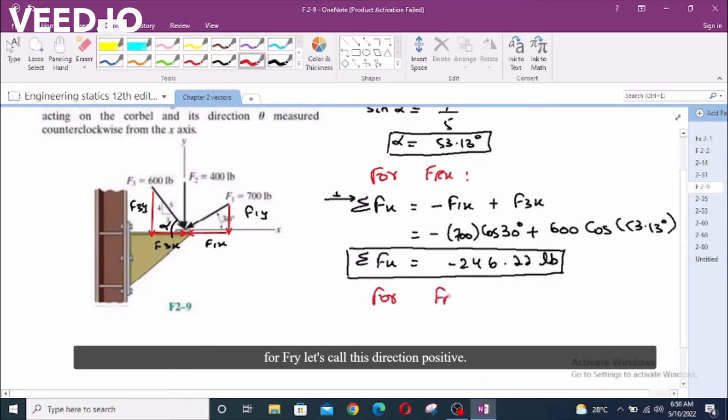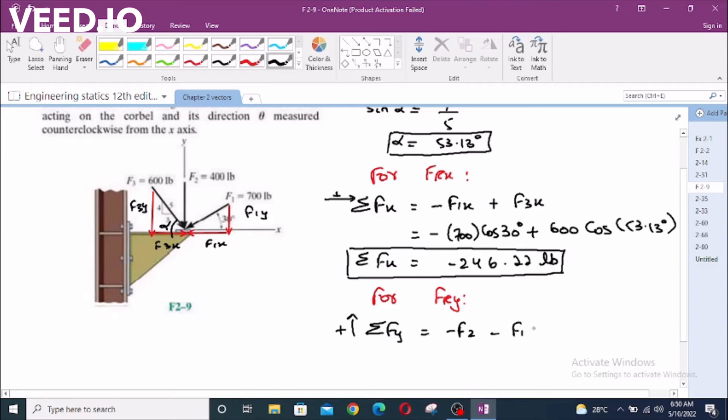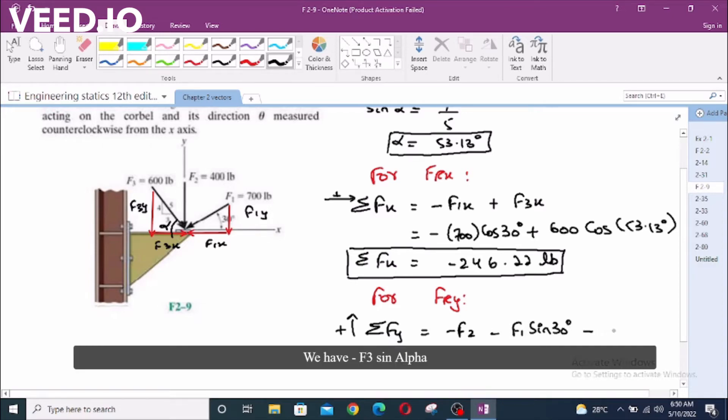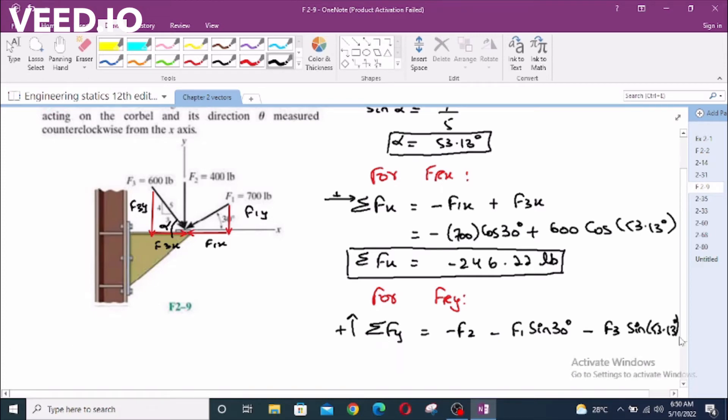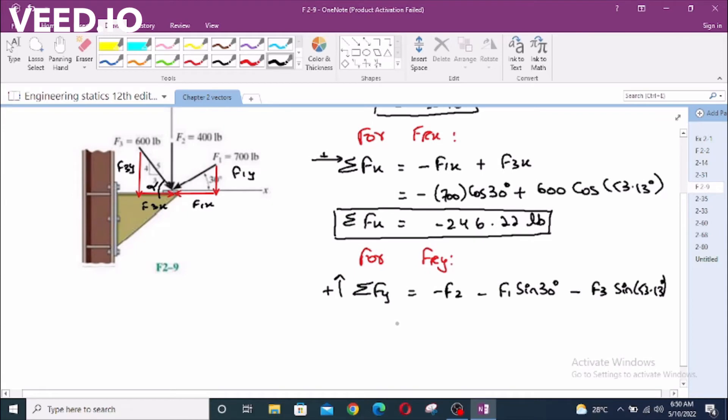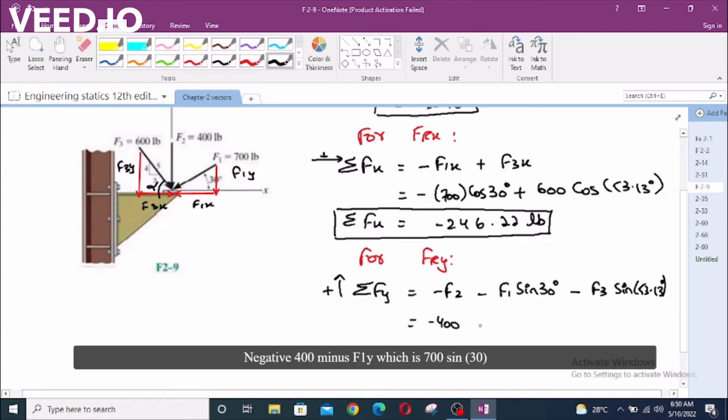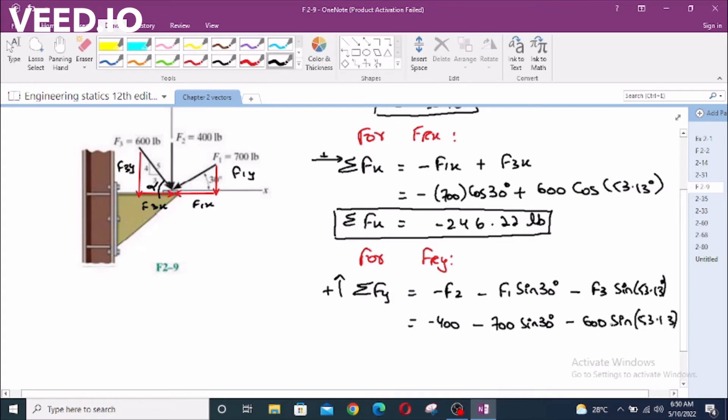For FRy, let's call this direction positive. We have one negative force F2, negative F1 sin 30, and negative F3 sin alpha which is 53.13 degrees. Negative 400 minus F1 which is 700 sin 30 minus F3 which is 600 sin 53.13 degrees. This will give you negative 1230 lbs.